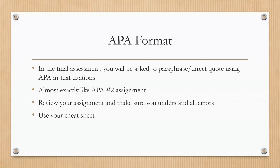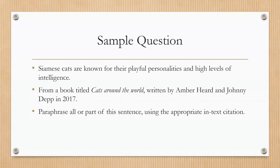The first part is going to be some questions about APA format. In the final assessment, you're going to be asked to paraphrase or direct quote using APA in-text citations. It's almost exactly like your APA number two assignment. So you might want to review your assignment and make sure that you understand all of the errors. If you don't, please come into course chat and we can talk about your APA number two and clear up anything before you begin the final assessment. Make sure, when you're doing this part, that you use your cheat sheet.